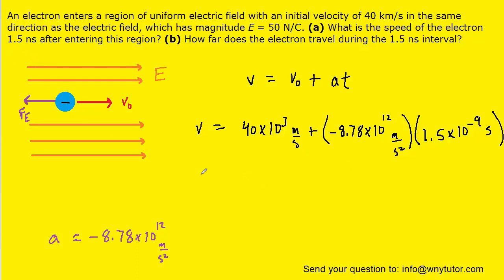And when we crunch this down, we should get a final velocity, or we can just say final speed because they only want that in part A, of roughly 2.7 times 10 to the fourth meters per second. So, this would be the correct answer to part A of the question.